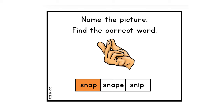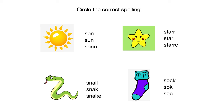You will need your paper again for this next assignment. Circle the correct spelling. We have four pictures, each with three words — two of them are incorrect and one is correct. You need to identify the correct spelling for each picture. You just need to write down the correct spelling. Let's go over them.